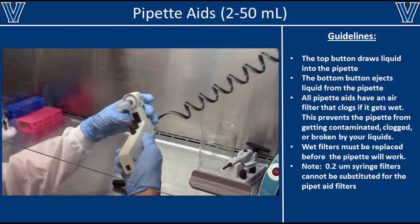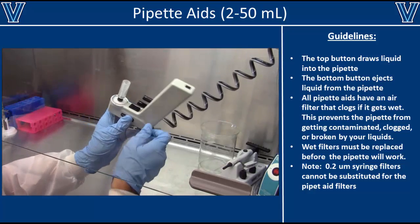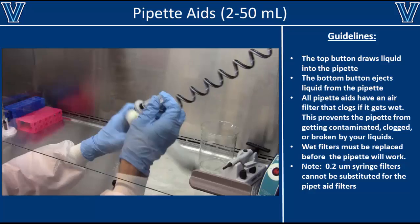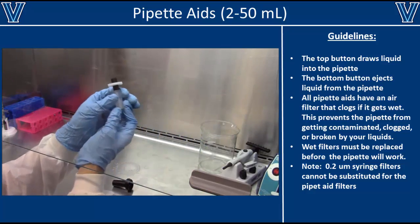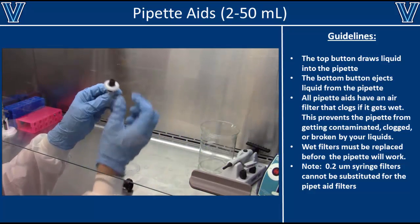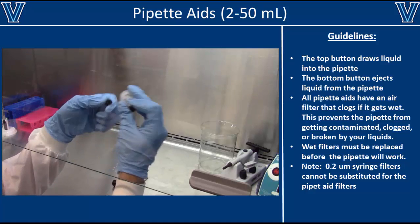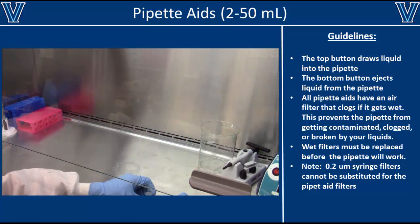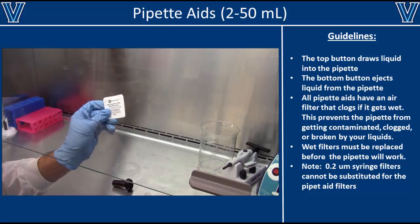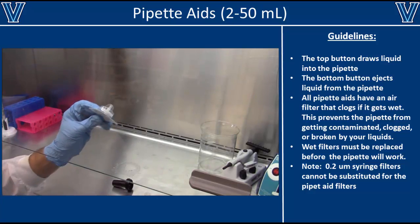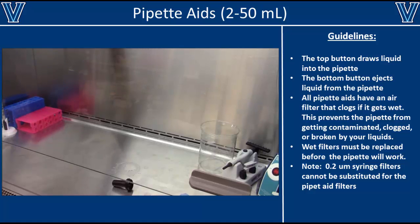Therefore, to get the pipette aid working again, you'll have to disassemble the pipette head and remove the clogged filter, as shown here. Once you've removed the clogged filter, you'll need to replace it with a new filter. Note that syringe filters designed for liquid will not work properly in a pipette aid. You must use the air filter specifically designed for your pipette aid.